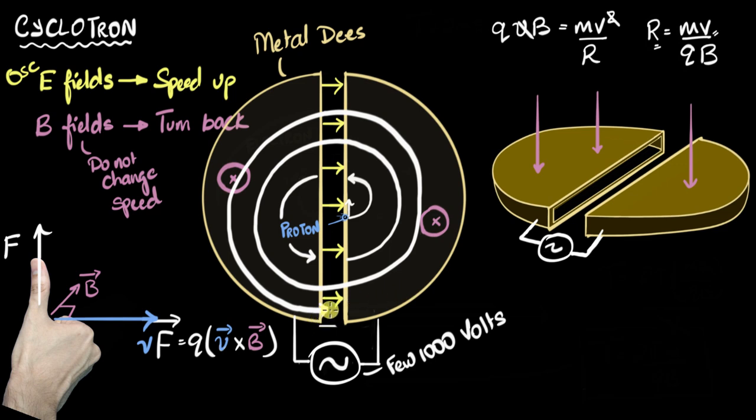And so that means, once the radius equals the radius of the D, that's the maximum, and then we need to let it go. And so there should be some way over here, some hole, some guided way over here, to shoot it out. And so once it has that maximum radius, the particle is shot out with whatever speed it has over there.